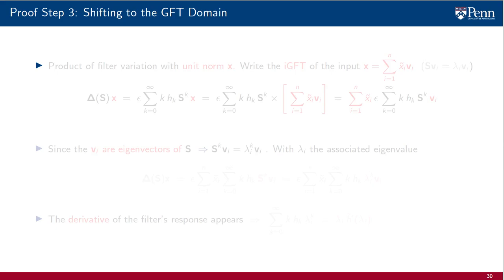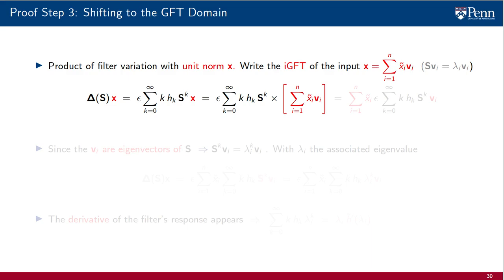The next step in the proof is to shift the analysis to the GFT domain so that filter properties can be leveraged. This is the critical step in the proof. Consider then the product of the filter variation Δ(S) with an arbitrary unit norm input vector x. The norm of this vector is 1 because we are looking at the computation of an operator norm. Recalling this fact will be important later on. We now invoke fact 1 in the proof preliminaries to write x as a sum of the eigenvectors vᵢ of the shift operator S multiplied by the respective entries of the GFT of x. This is where we move the analysis to the GFT domain.